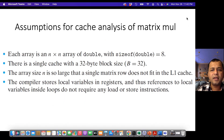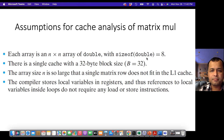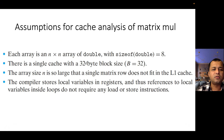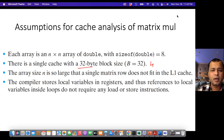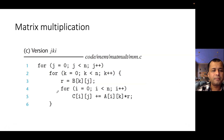To do the cache analysis on different versions, there are some assumptions: the matrix is made up of doubles, and the block size is 32 bytes, meaning four doubles can be stored per block.